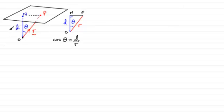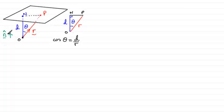Now if we introduce a vector which is perpendicular to the plane, let's say we call it N, and we make it a unit vector — I'm going to write a little circumflex, or hat, over the top. N-hat is our unit vector which is normal to the plane.